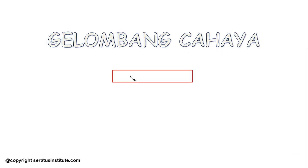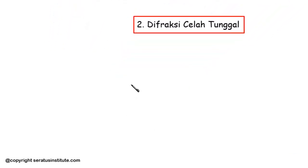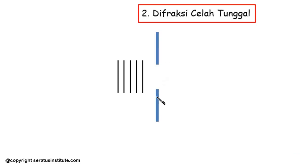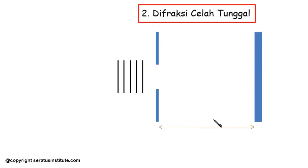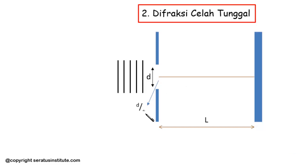Kali ini kita akan belajar subbab difraksi celah tunggal. Untuk memahami difraksi celah tunggal, saya gambarkan ilustrasi perangkat percobaannya. Jadi ada sumber cahaya, kita gambarkan muka gelombangnya berupa gelombang berdiri, lalu gelombang itu melewati celah sempit. Dari celah sempit ini kita bagi menjadi dua bagian, atas dan bawah. Kita letakkan layar sejauh L dari celahnya. Jika celah ini lebarnya D, maka terbagi dua menjadi D per dua dan D per dua.